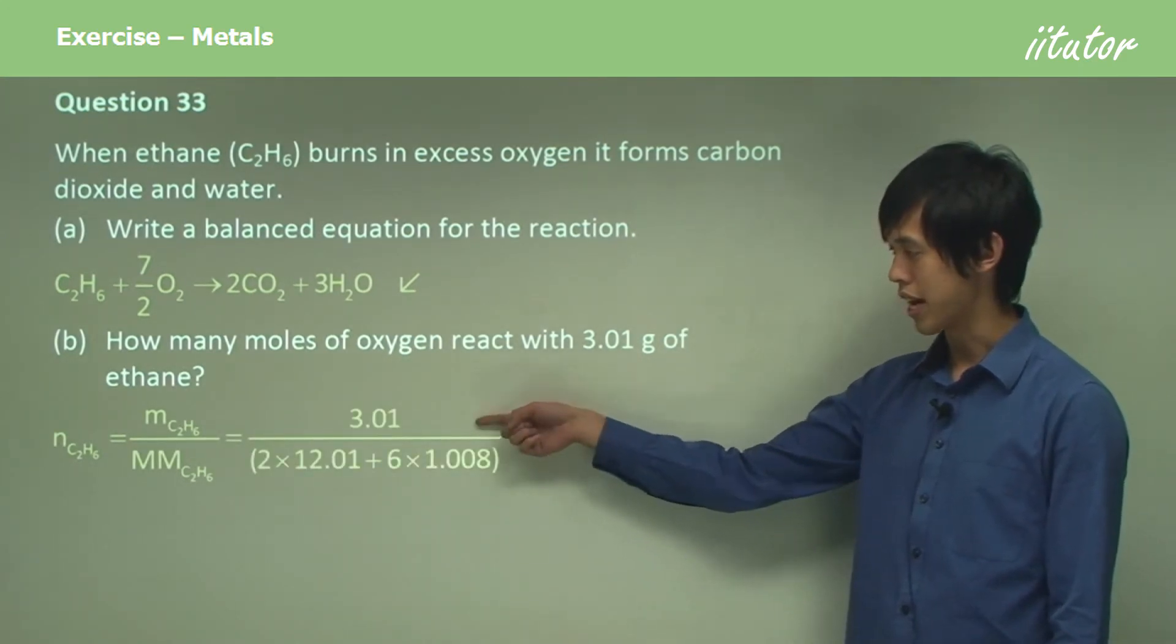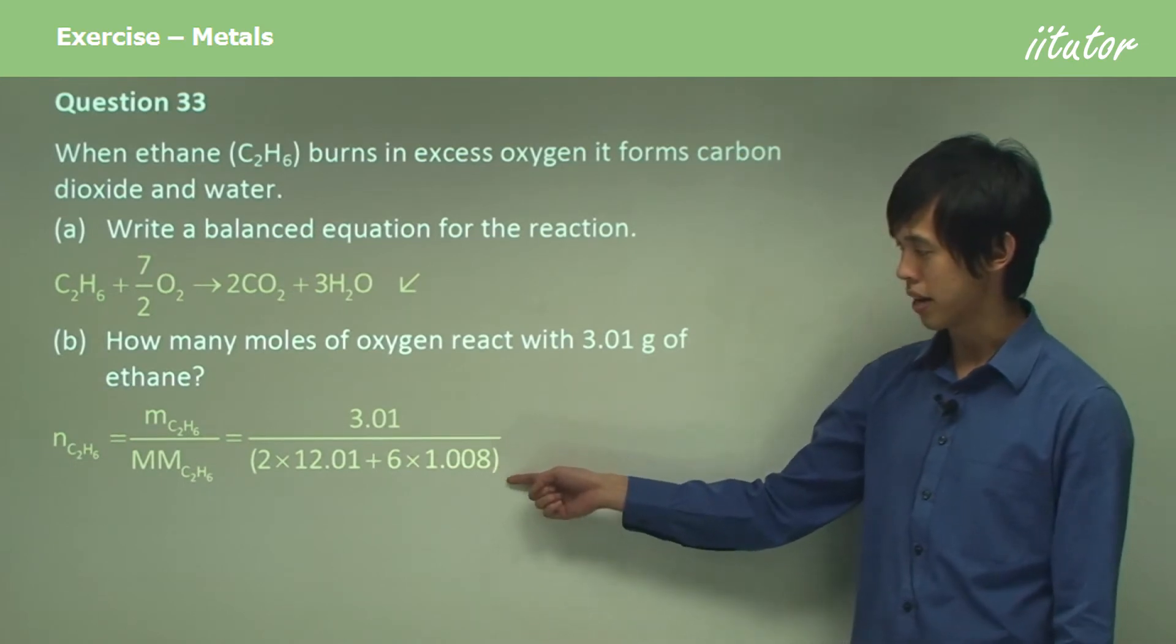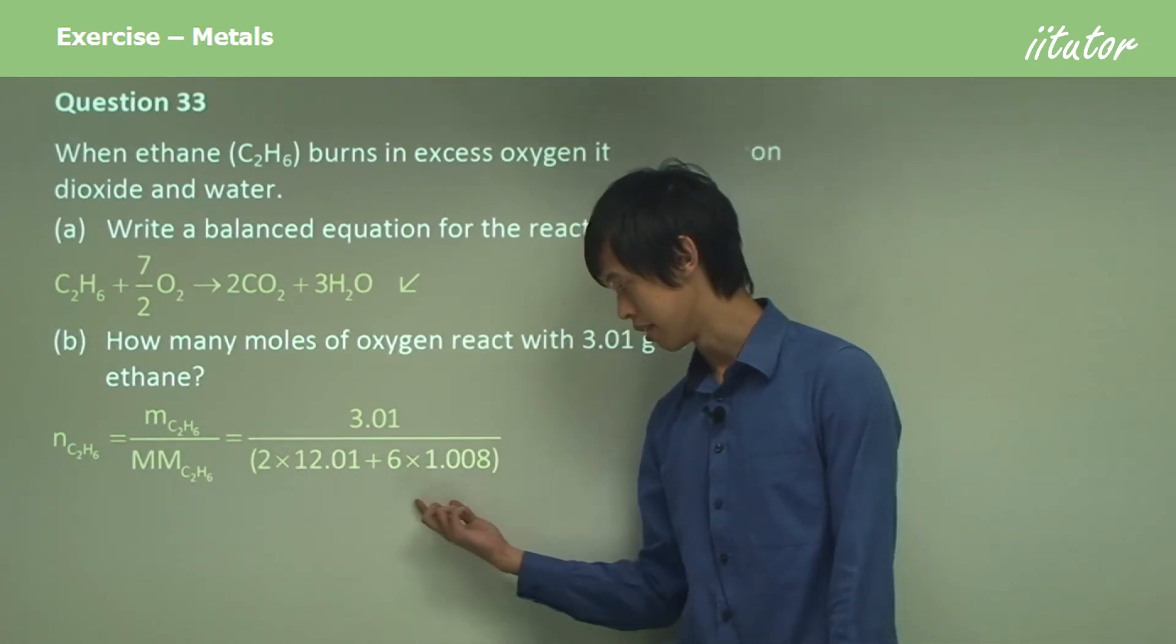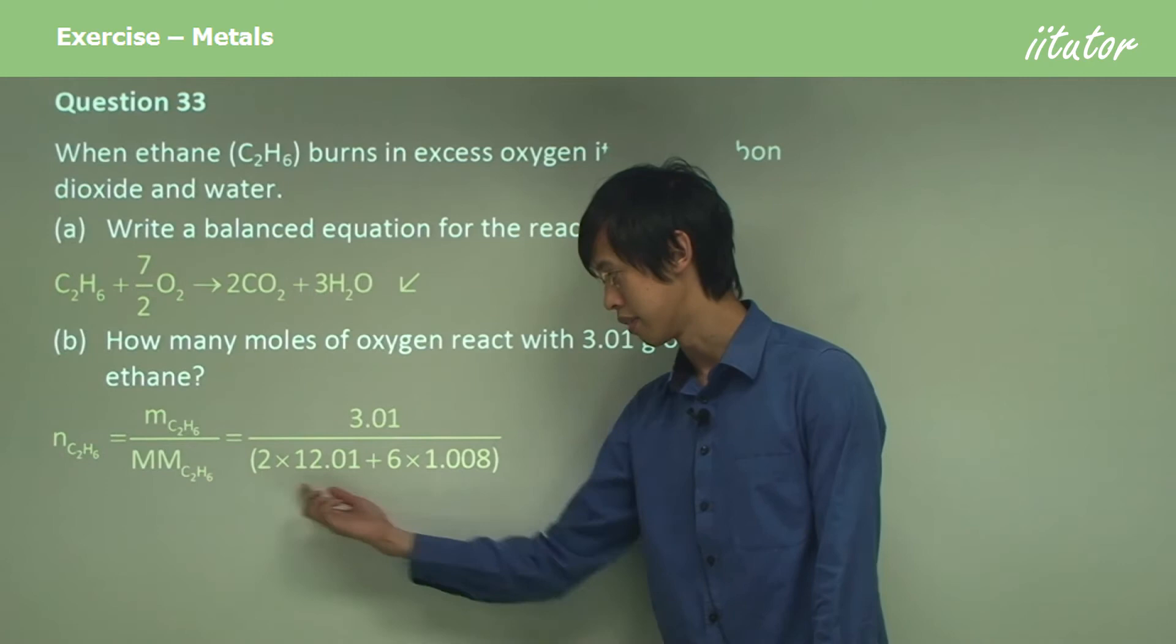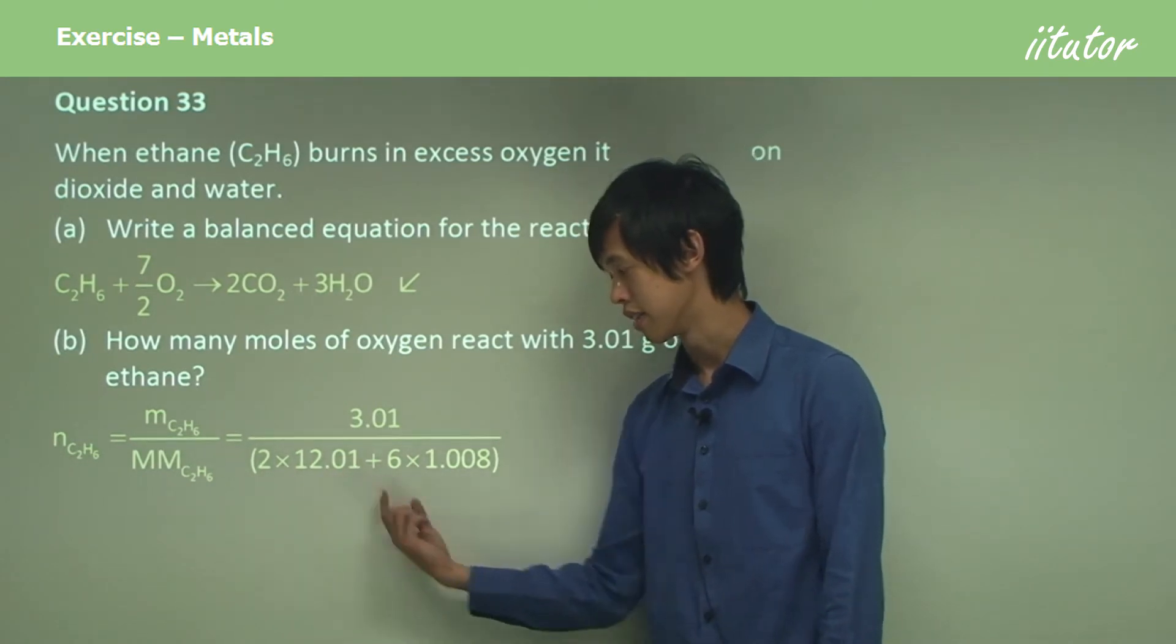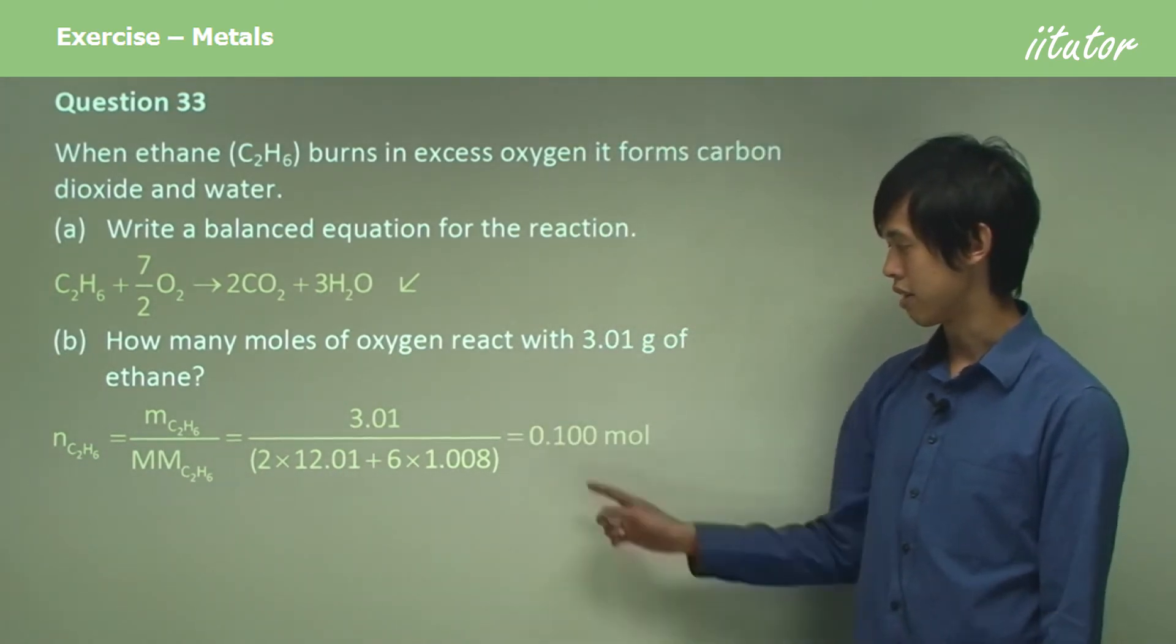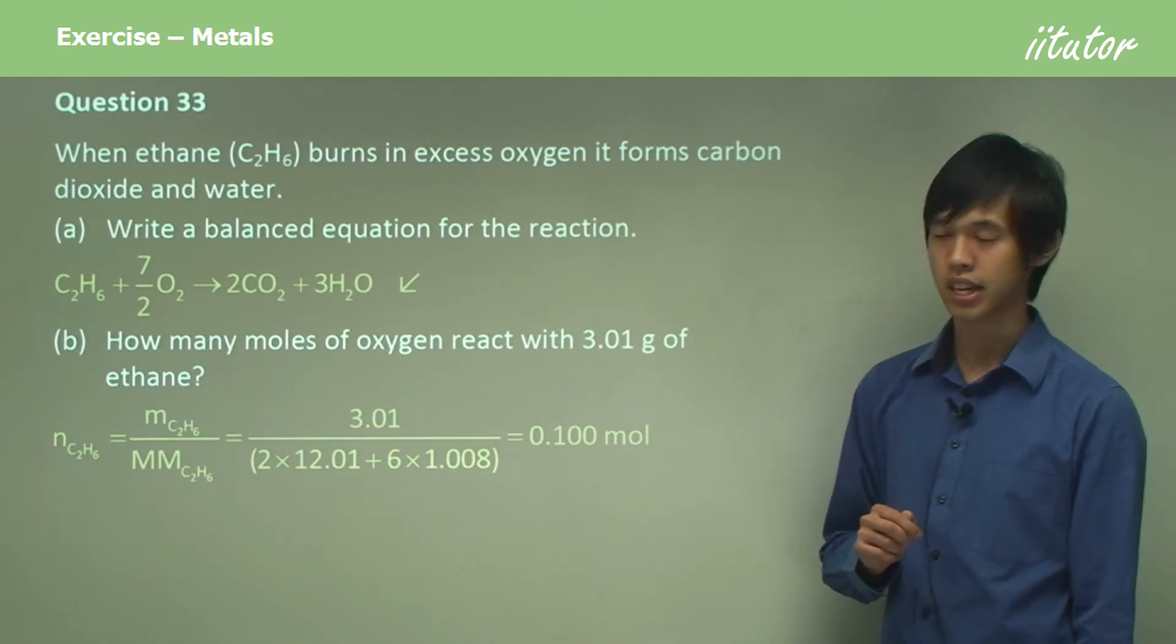The number of moles of ethane is given by that equation. So I just put the mass here, and the molar mass is down the bottom. These numbers I look up. These numbers are in the chemical formula, two and six, and so I get 0.1 mol. Okay, that's a very nice number.